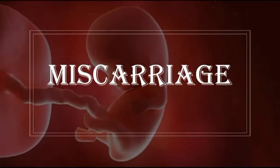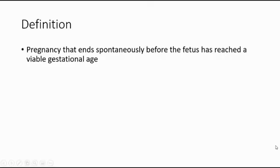In this video, I'm going to talk about miscarriage. Miscarriage is the pregnancy that ends spontaneously before the fetus has reached a viable gestational age, and this usually happens before 24 weeks of gestation.